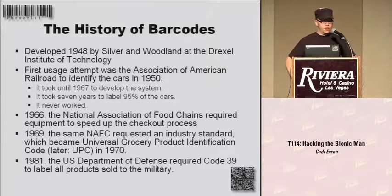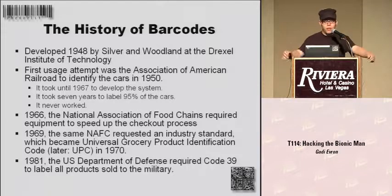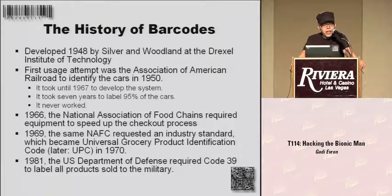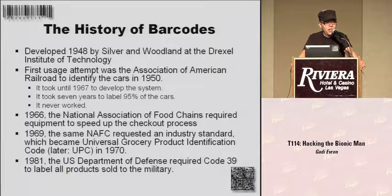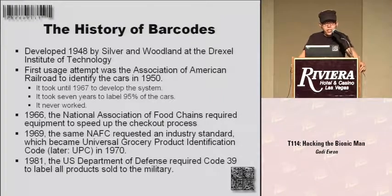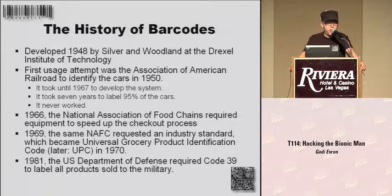What about the history of barcodes? They got developed in 1948 by two people. The first usage attempt — and that's actually really funny — was the American railroad people that tried to barcode all the cars they have. It took them 17 years to label all the cars, and then the system didn't work. Like, it never did. At that point in time, people figured barcodes are useless. However, in 1966, the National Association of Food Chains started to require having barcodes on products to speed up the checkout process so they could make more money. And that usually tends to be a really good driver for technology, either making more money or porn.